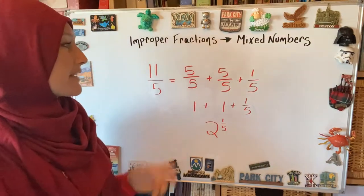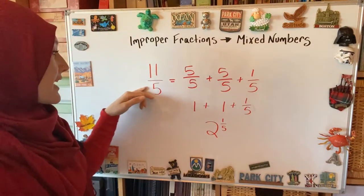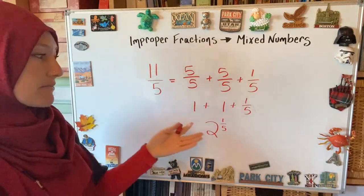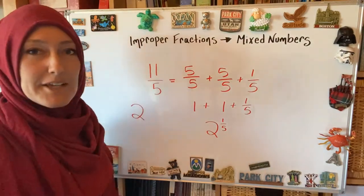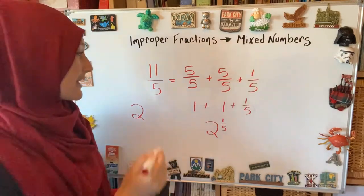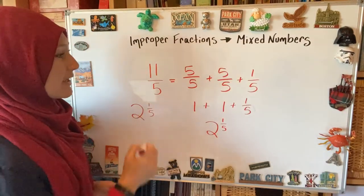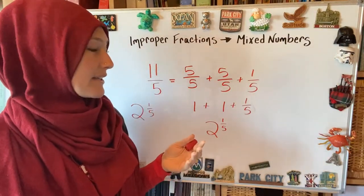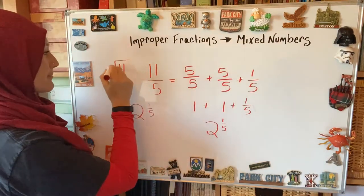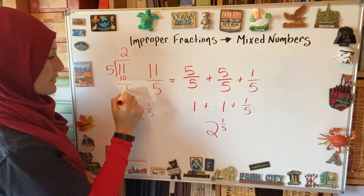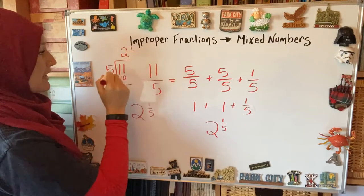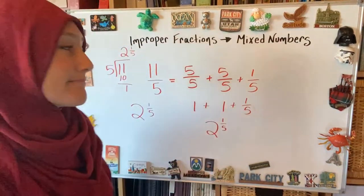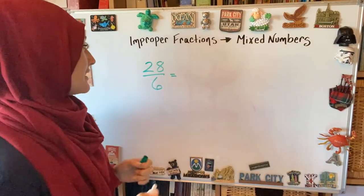If I think of it mentally, I'm thinking: 5 times what gets me close to 11? Five times 2 is 10. Between 10 and 11, there's 1 left over — one-fifth left over. So: expanded, mental division, and if you get stuck on a hard one, you can do regular division. My leftover is 1, so that becomes my numerator, and the fifth-sized part stays. You can choose whatever method works for you.